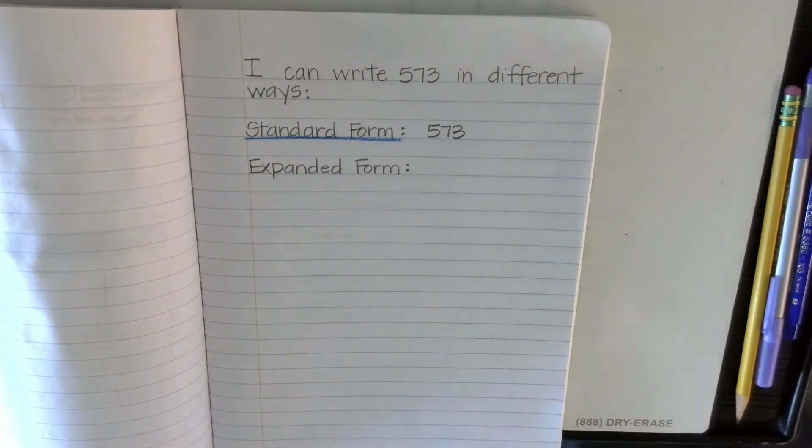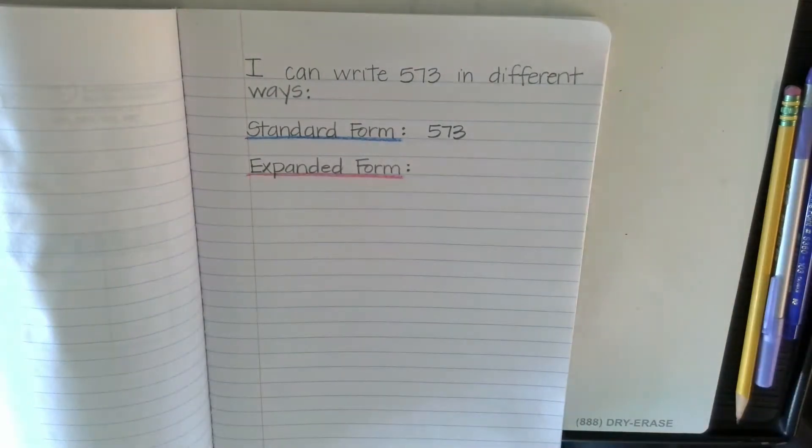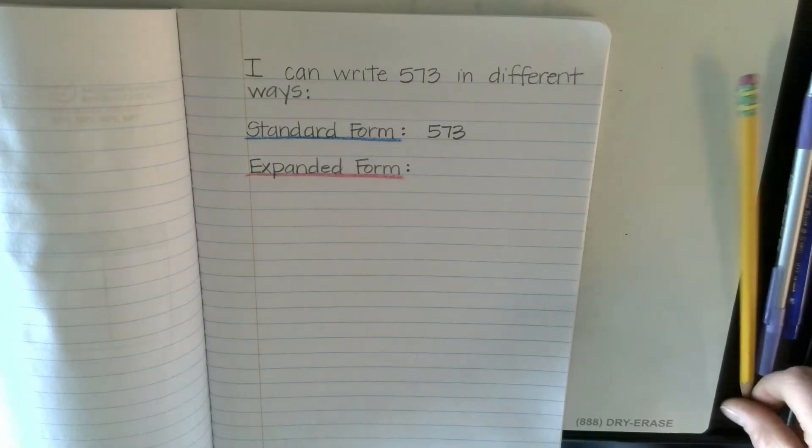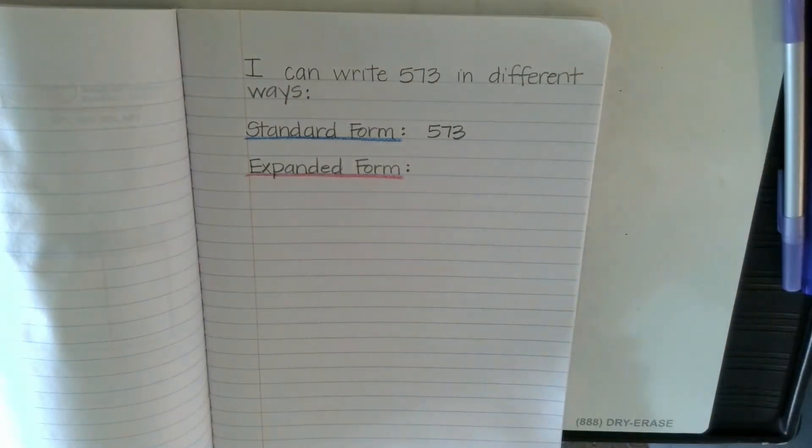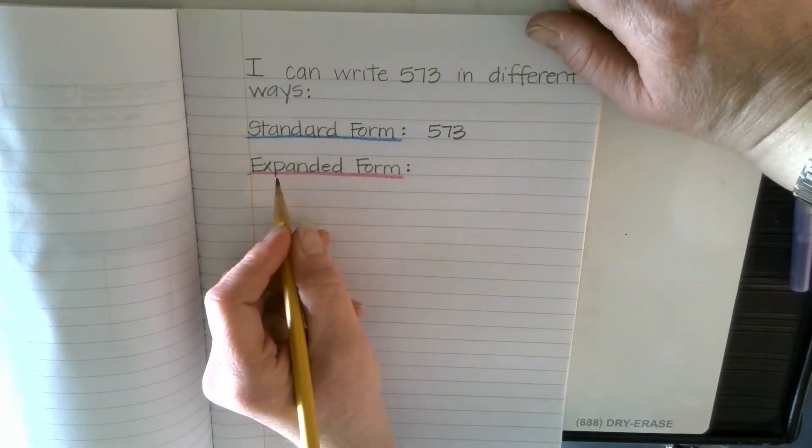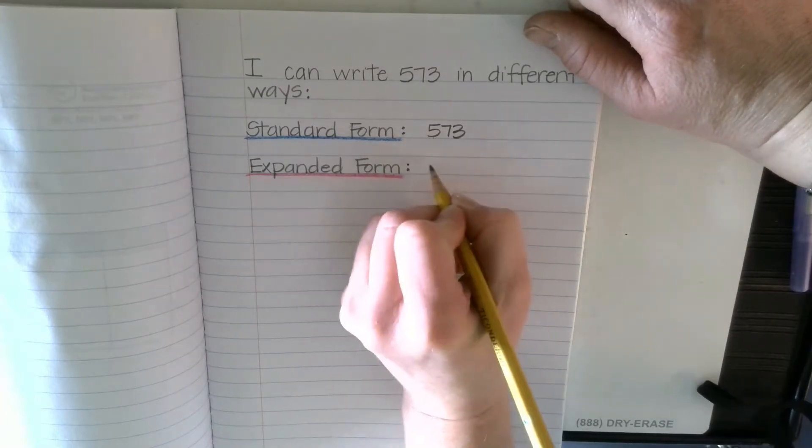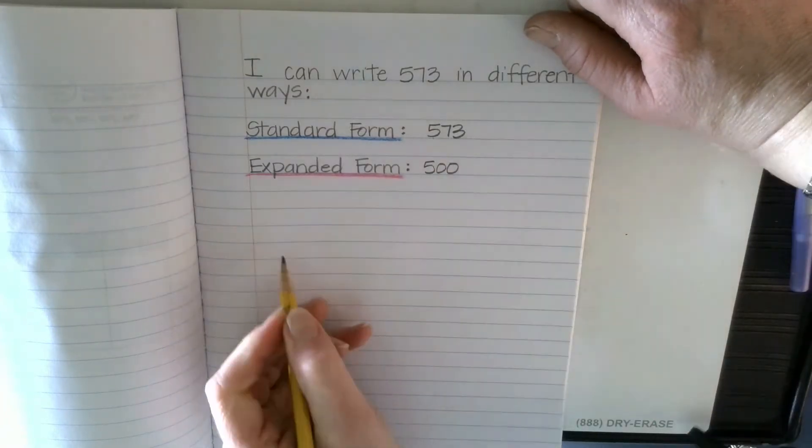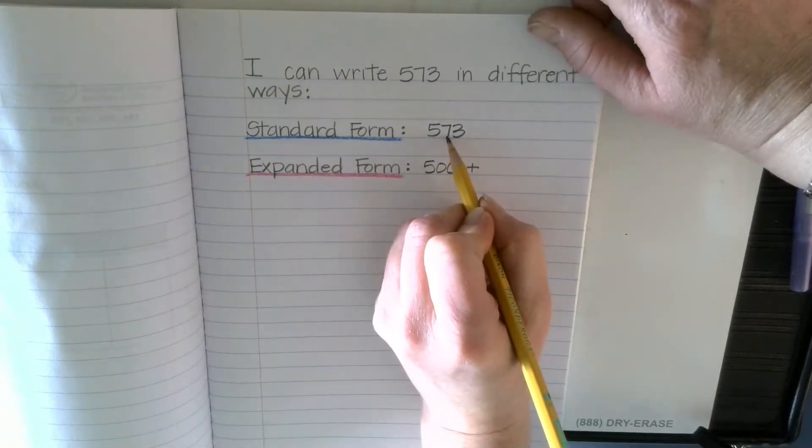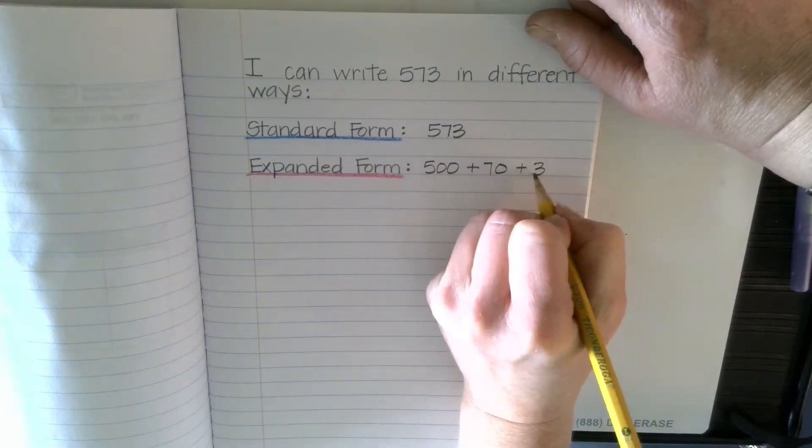Now remember, expanded form is when we write the value of the digits. So we would write 500 plus the value of our 7 tens is 70, plus 3.